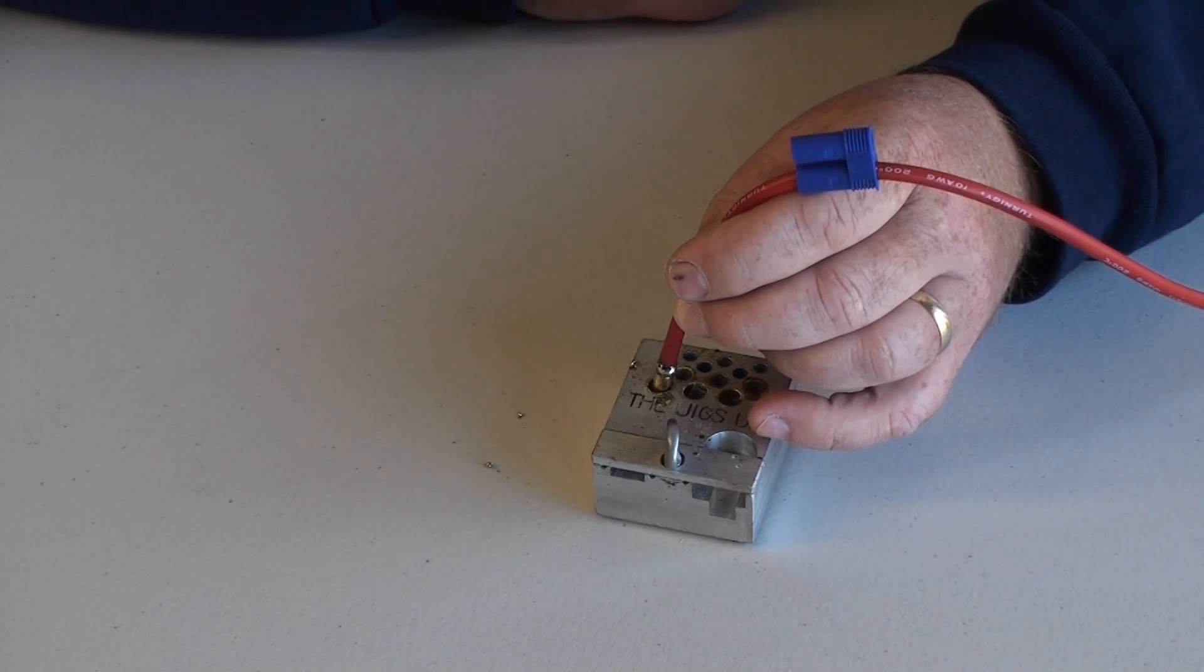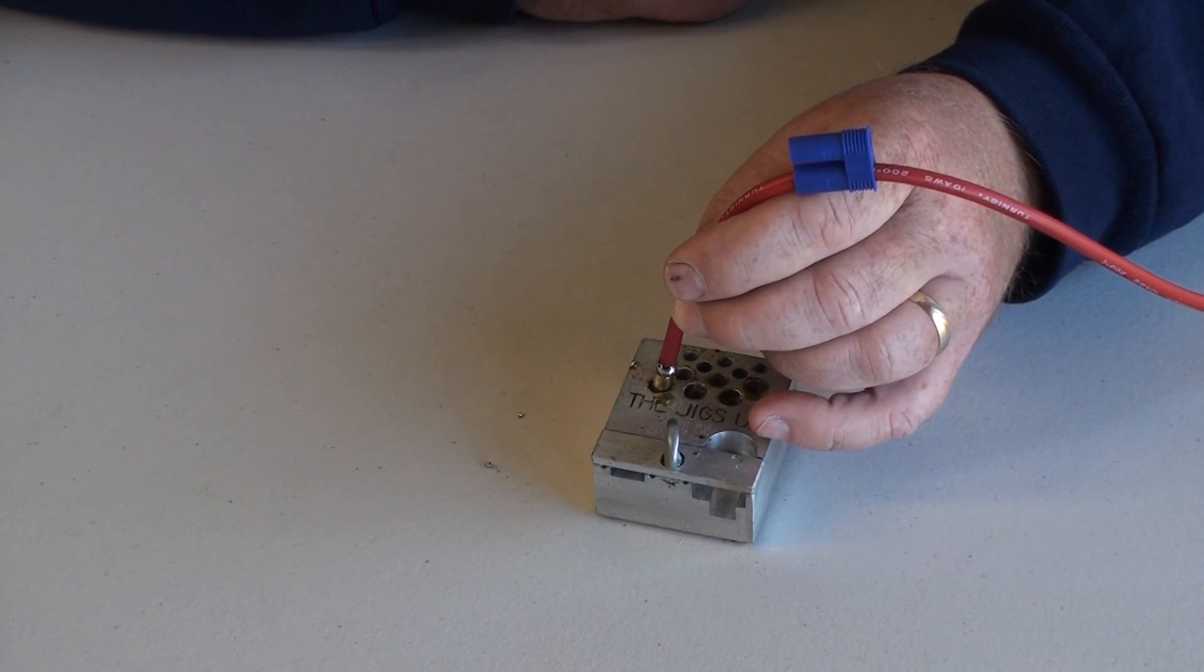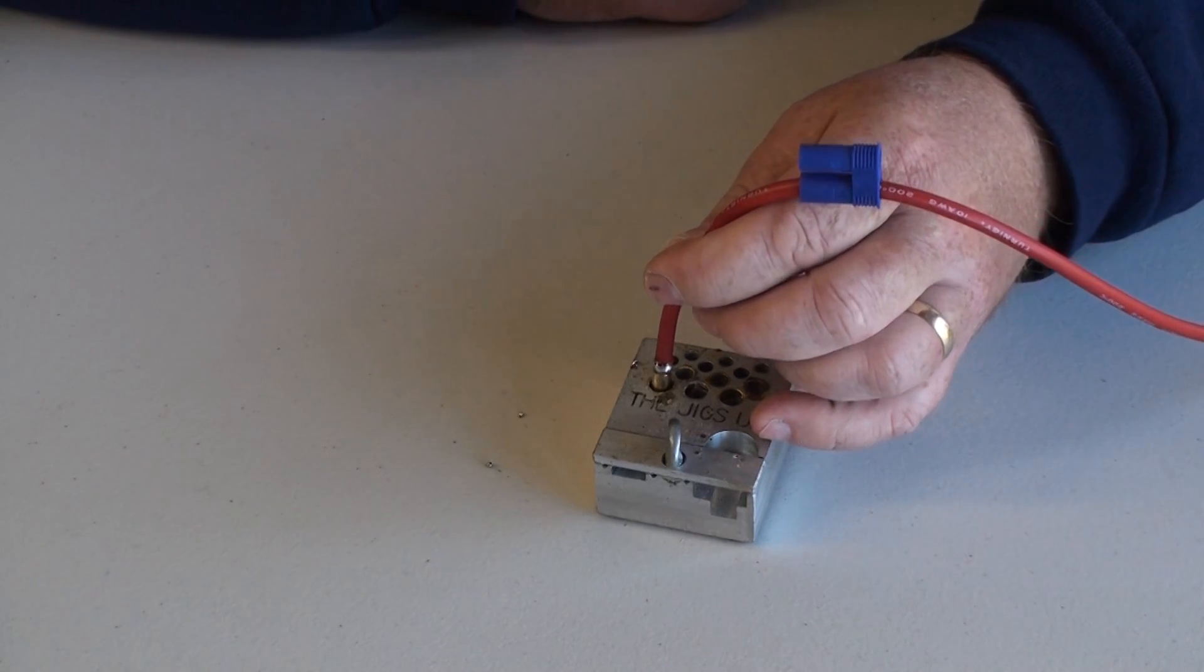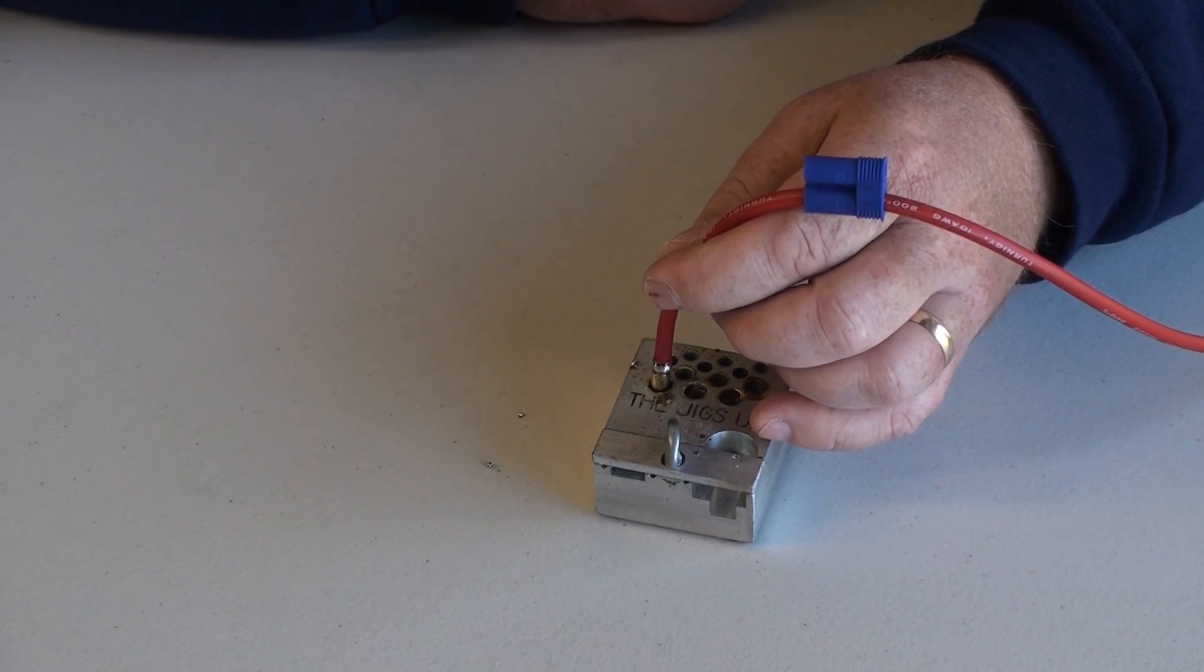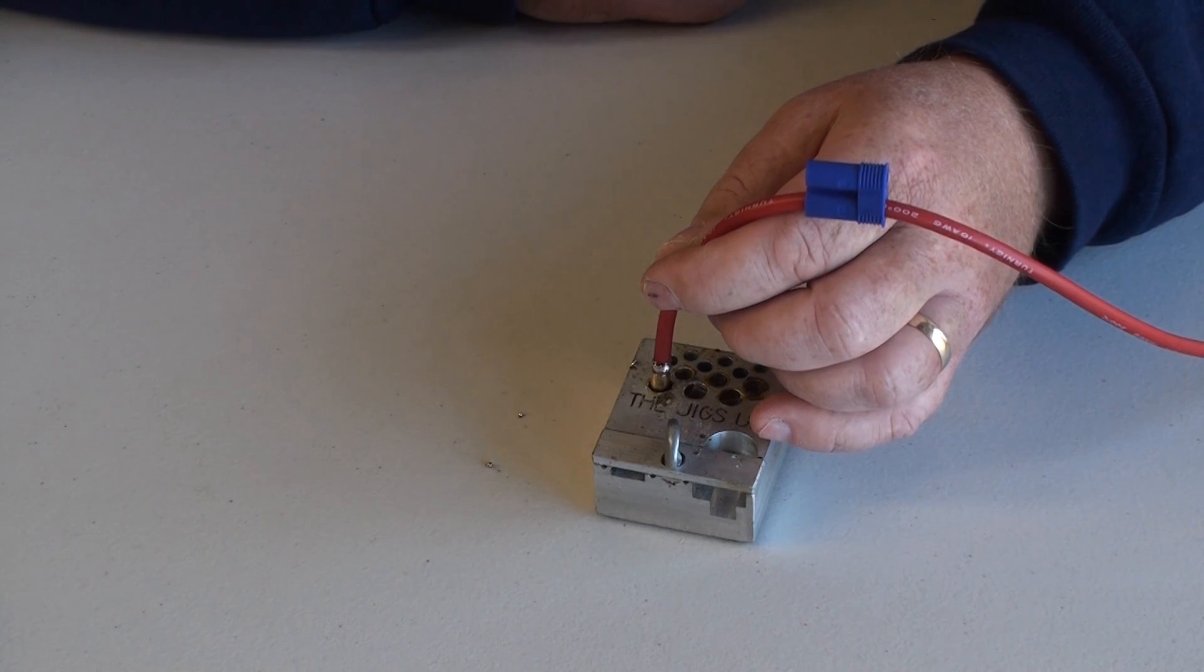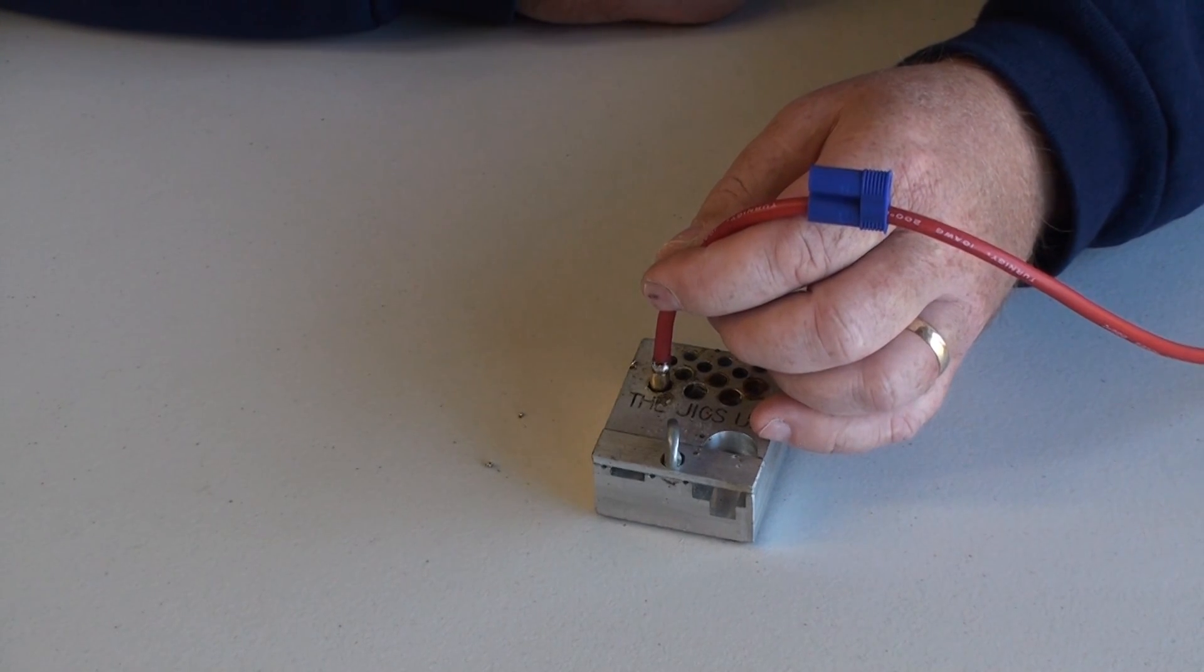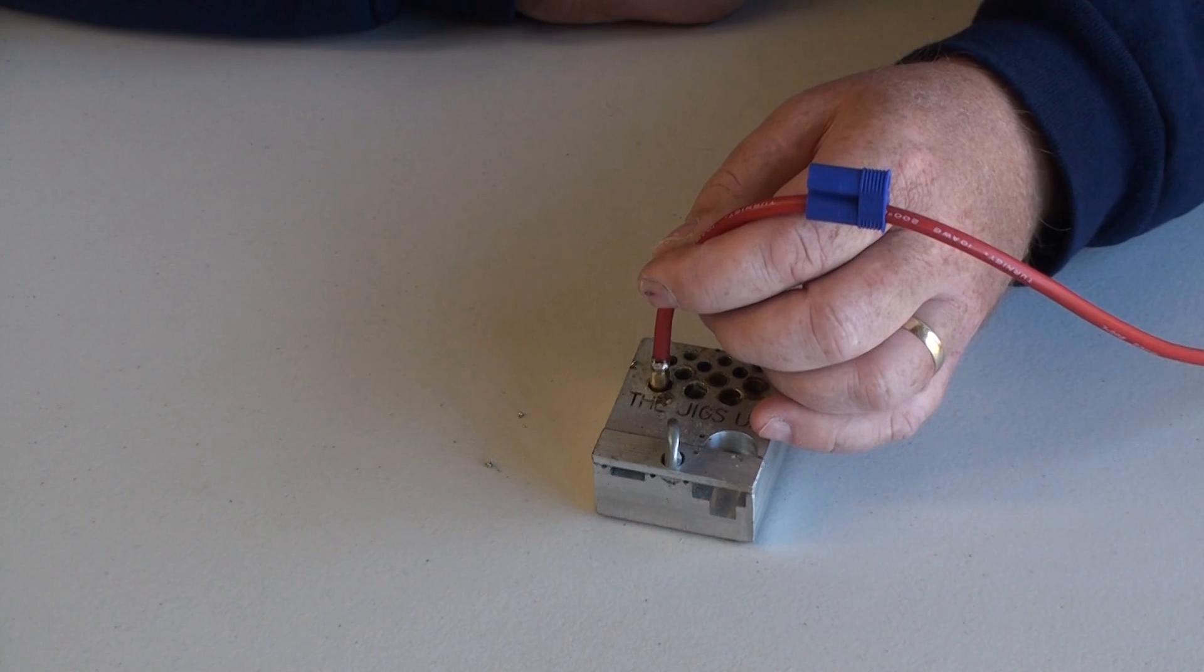It's very important not to move this while it's cooling, and also not to blow on it, because you don't want the solder cooling too fast. If the solder cools too fast, you end up with a dry solder joint.